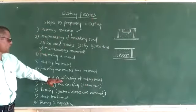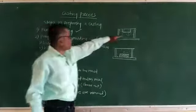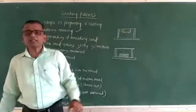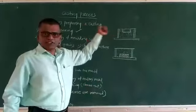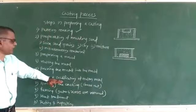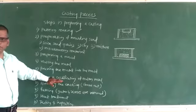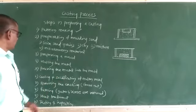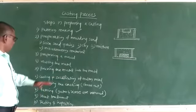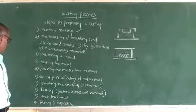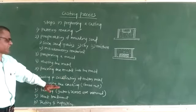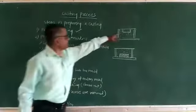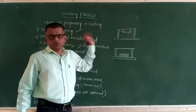Then comes cooling and solidification of the metal. The mold is allowed to cool and solidify. A certain time is required for cooling and solidification — that time is called the solidification time. The next step is removing the casting, which is the shake-out operation, where the casting is removed from the molding sand.